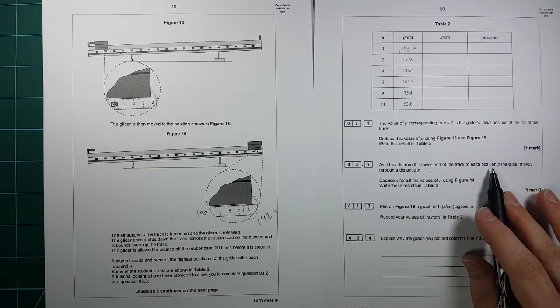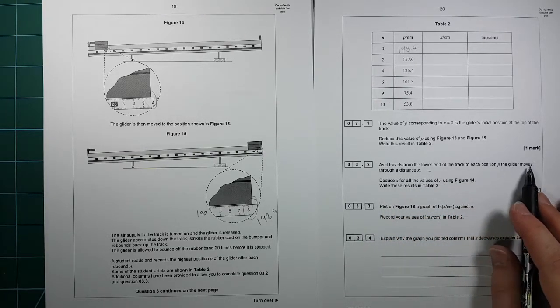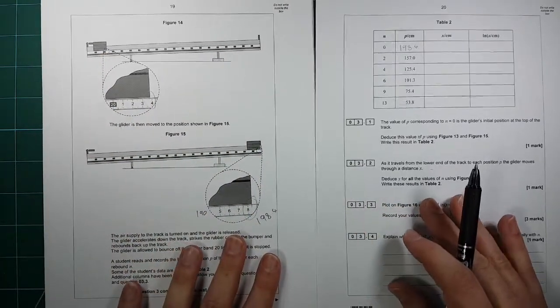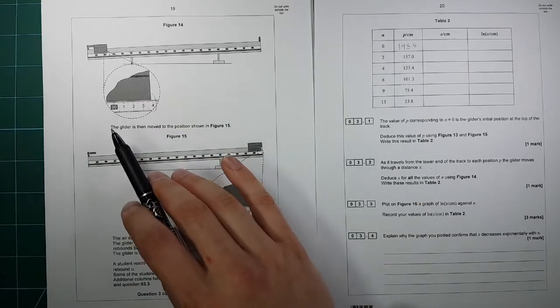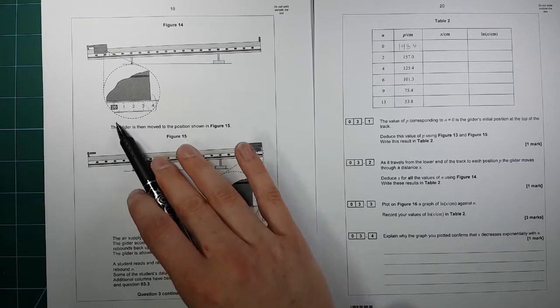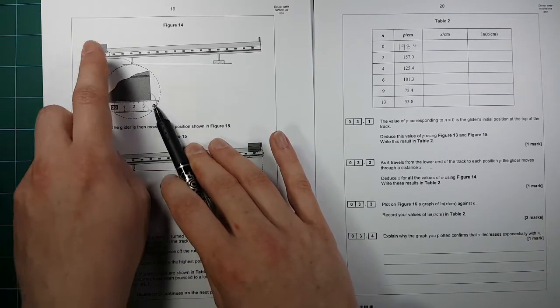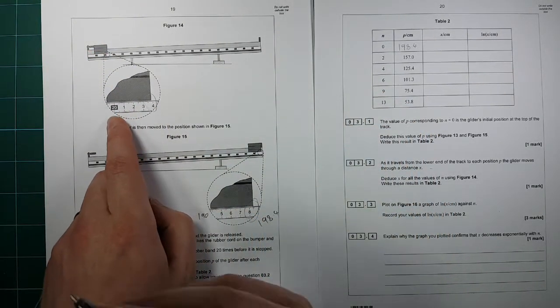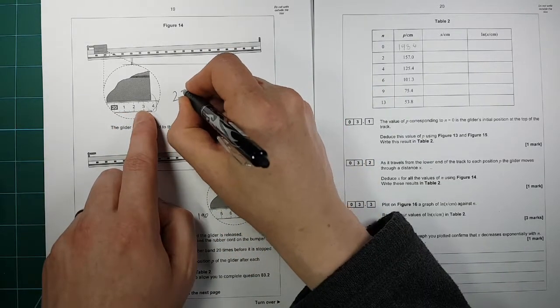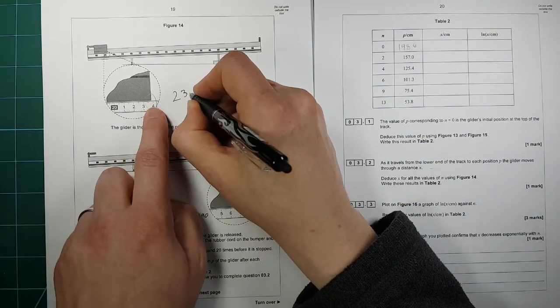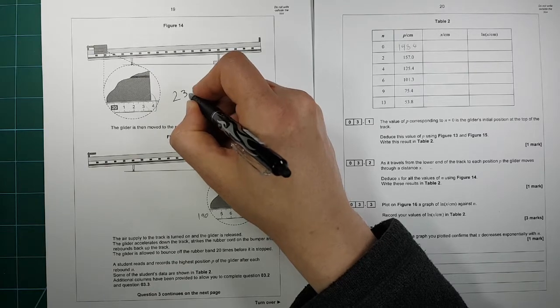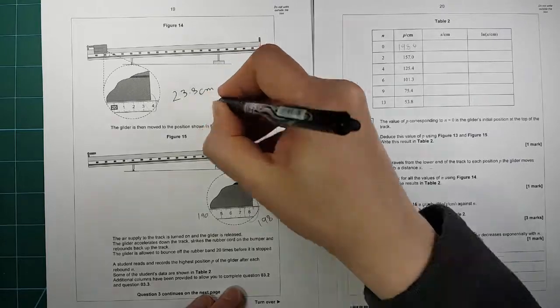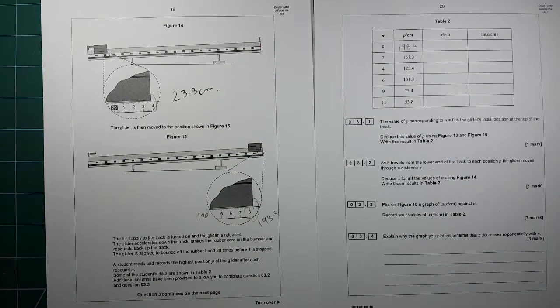As it travels to the lower end of the track, position P, the glider moves through a distance X. So the difference between there and there is the distance X. So in each case, we need to take away this result. This is essentially a zero error. This value here is not our reading because the zero is actually at 23.8 centimeters.